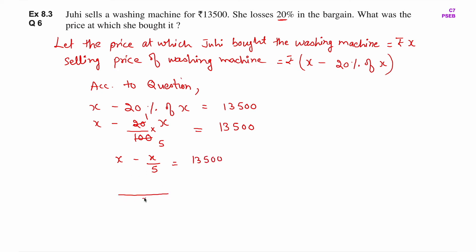Left-hand side पर denominators का LCM लेते हैं. 1 और 5 का LCM 5 है. X का denominator 1 है, so 5 ÷ 1 = 5, फिर 5 × X = 5X. दूसरे term के लिए 5 ÷ 5 = 1, और 1 × X = X. So left-hand side बनेगा (5X minus X) upon 5 equals to 13,500, यानी 4X upon 5 equals to 13,500.